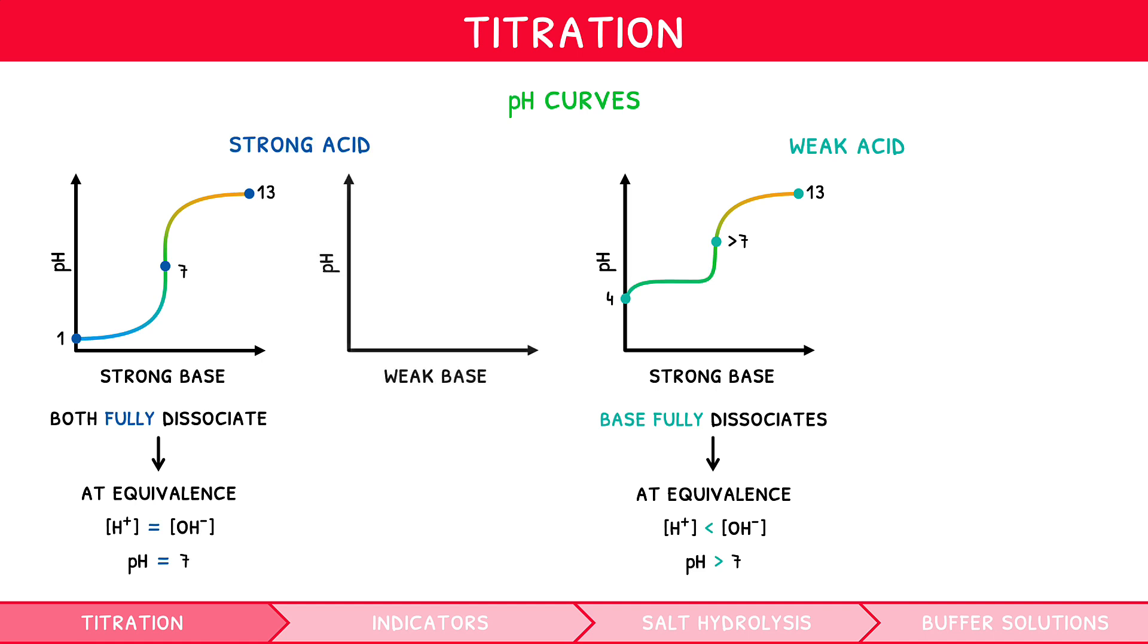When adding a weak base to a strong acid, the strong acid fully dissociates, whereas the weak base only partially dissociates. Thus, at equivalence point, the concentration of H⁺ is greater than OH⁻, and pH is less than 7.